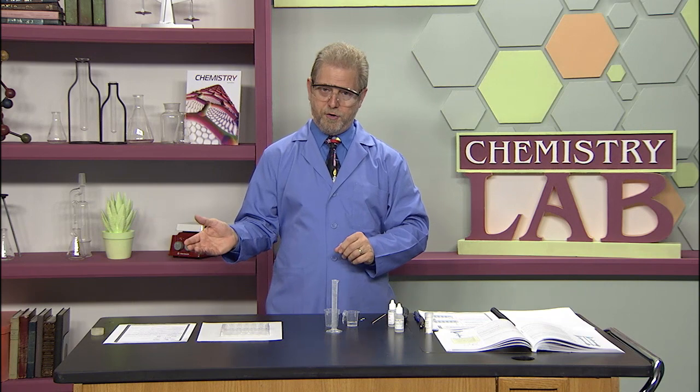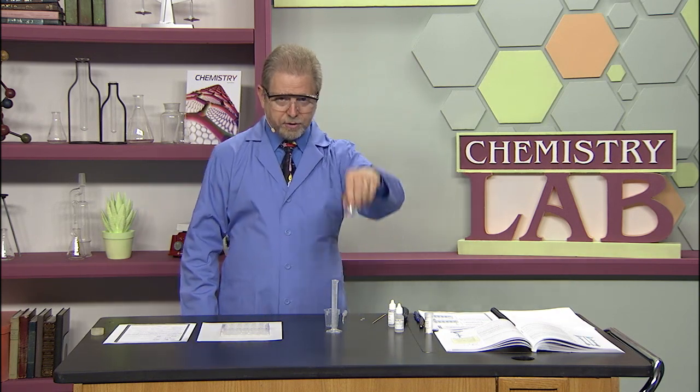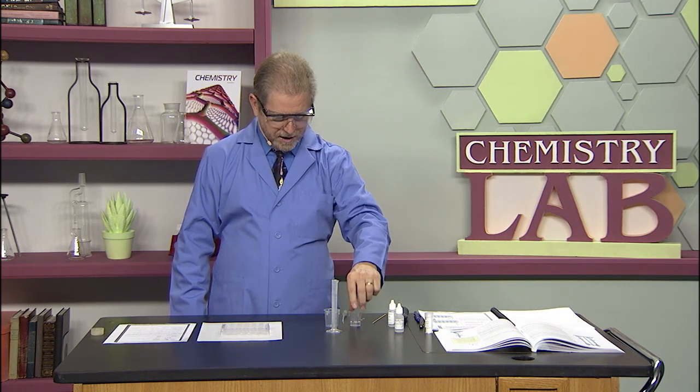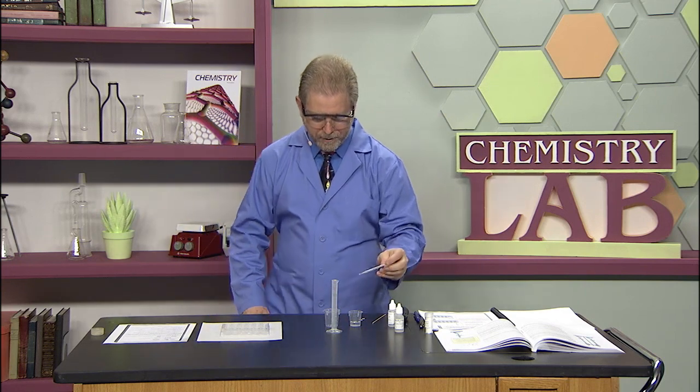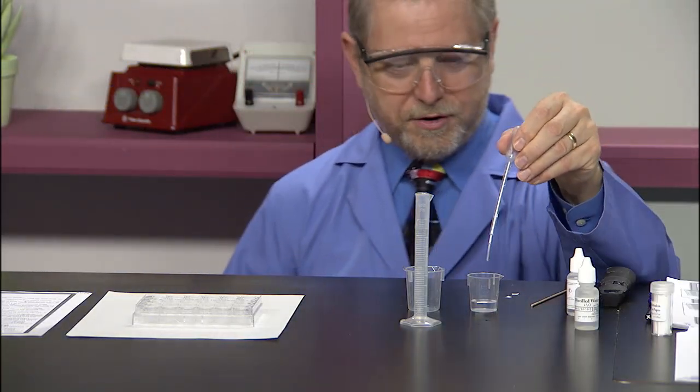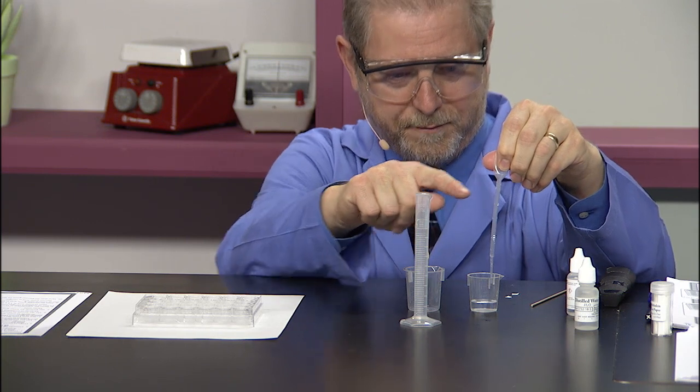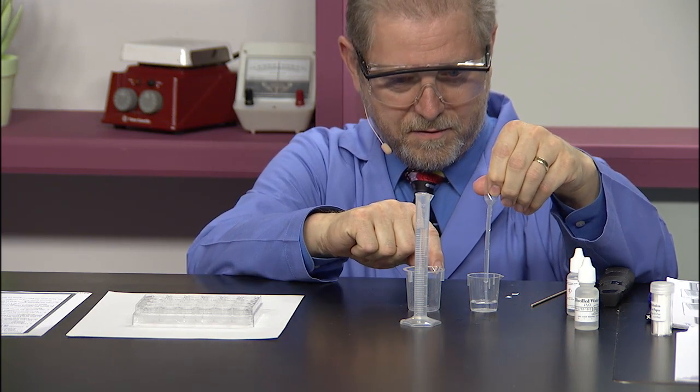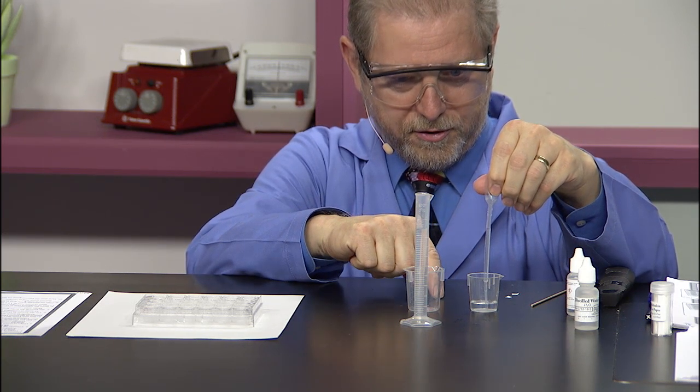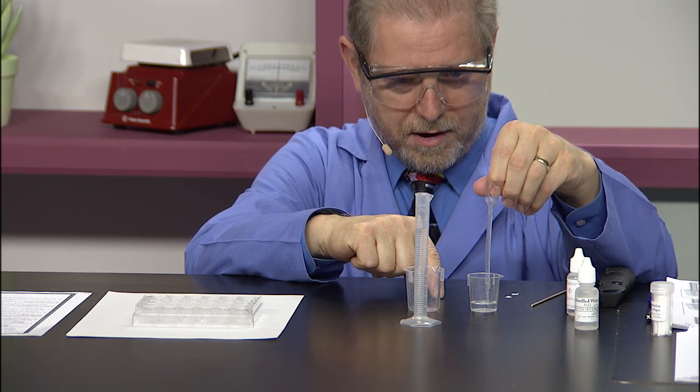The next thing is to take some vinegar, just a few milliliters into the littlest beaker. Then you want to pull up with your graduated pipette, which goes right up to this line, one milliliter of the vinegar and put that into the other beaker.